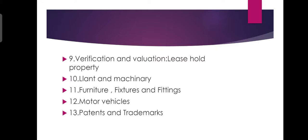Furniture, Fixtures and Fittings is a group. The auditor should verify the balance of assets as well as additions made thereto by comparing original invoices. If there are any sale procedures, the auditor can identify the details. Any profit and loss should be recorded. Depreciation is also noted and compared.